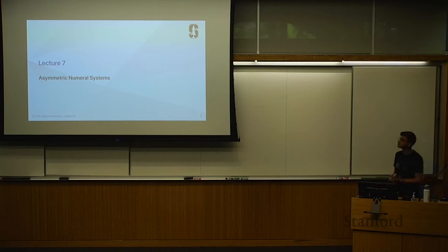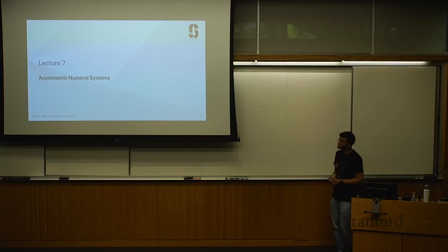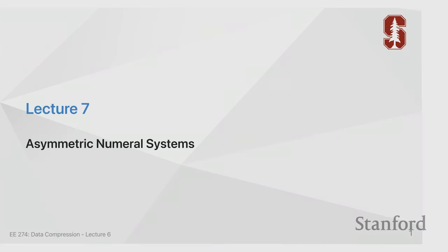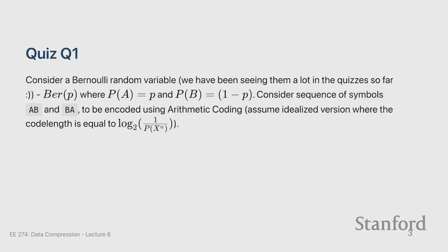Welcome back. Today's lecture is going to be on asymmetric numeral systems. Let's go over the quest from last time. Last time we learned about decoding, and the quest question was again around a Bernoulli random variable, where probability of a is p and probability of b is one minus p. You were asked to consider two symbols, a,b and b,a.